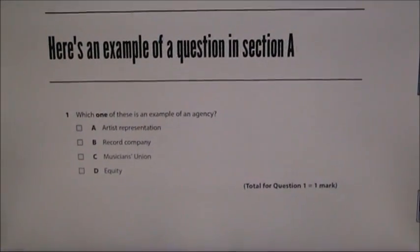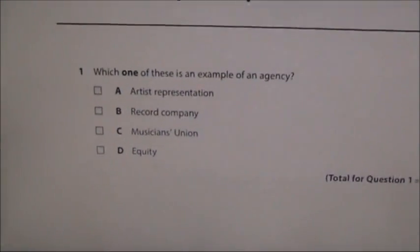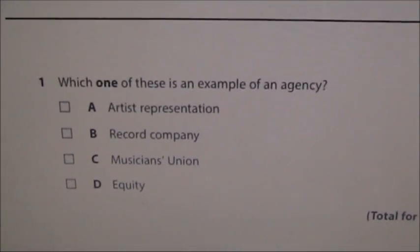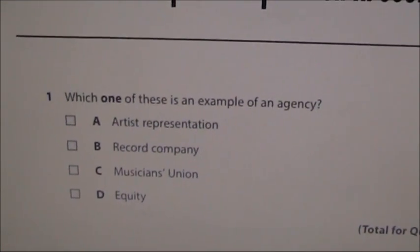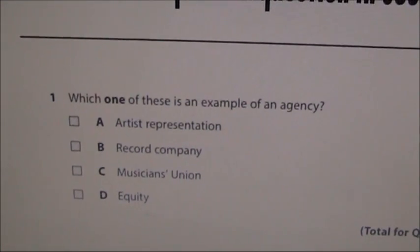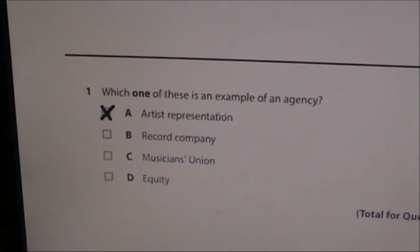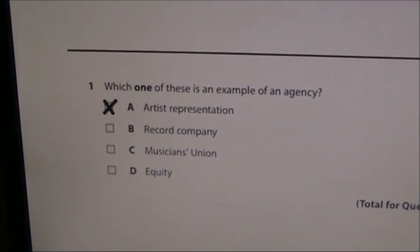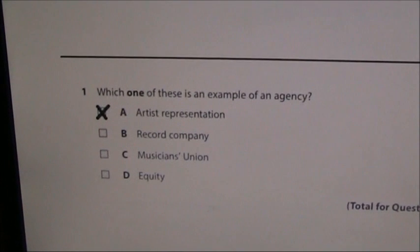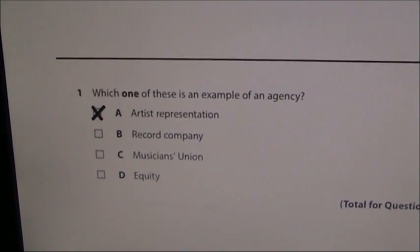This is what Section A questions look like. You've got four possible answers, of which you have to choose one. The answer to the example question would have been artist representation, which is an example of an agency.